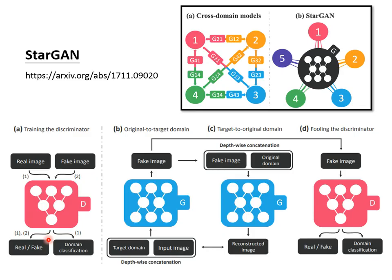In addition to Cycle GAN, there is a more advanced version that can do image style transfer called Star GAN. While Cycle GAN can only transfer between two styles, Star GAN can transfer between multiple styles. But that is not the key point I want to elaborate on today, so we will stop this topic here.